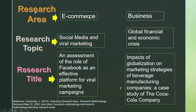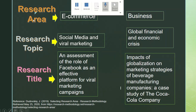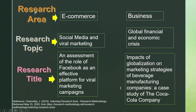The word e-commerce is a word that is bigger in scope, in which social media and viral marketing could be a specific topic. The third reflects a research title under the research area e-commerce and the topic social media and viral marketing. These examples go from a bigger scope to specific, to more specific.